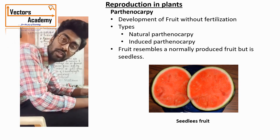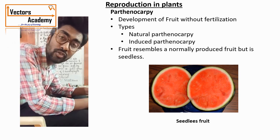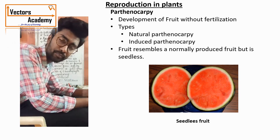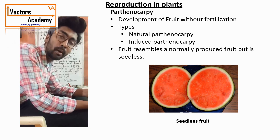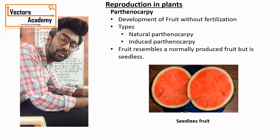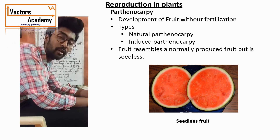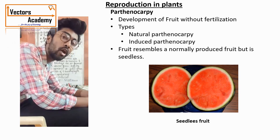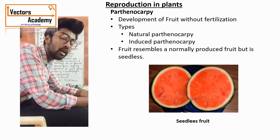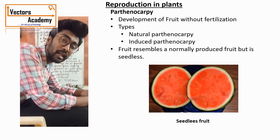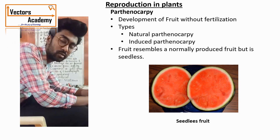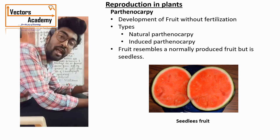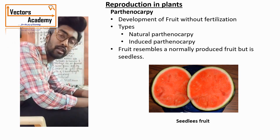Induced parthenocarpy, also called artificial parthenocarpy, is where there is formation of fruit but the flowers are sprayed with growth-promoting hormones such as indole acetic acid (IAA), naphthalene acetic acid (NAA), and gibberellin. These hormones induce fruit formation. For example, seedless tomatoes are produced by treating with a high dose of auxins, and seedless grapes are produced by treating with gibberellin.